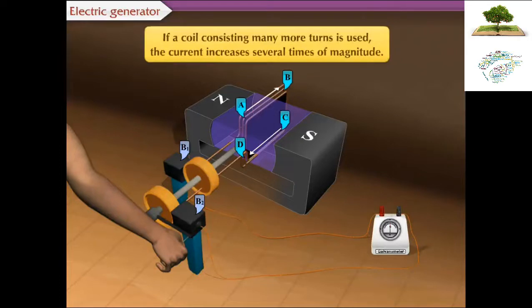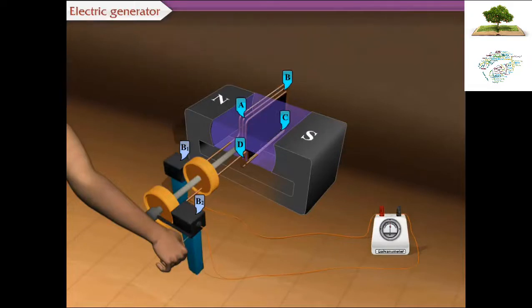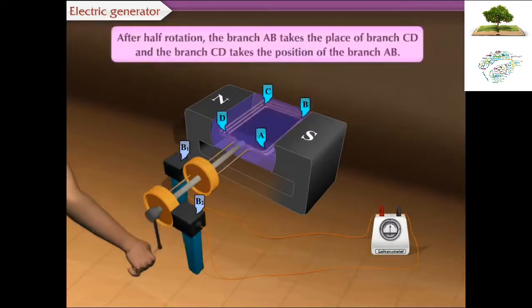If a coil consisting of several turns is used, the current increases several times in magnitude. After half rotation, the branch AB takes the place of branch CD and the branch CD takes the position of the branch AB.